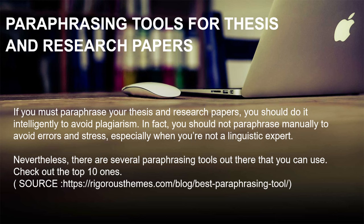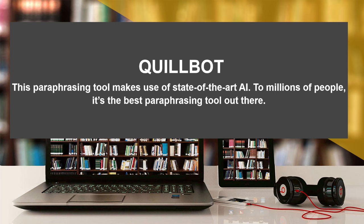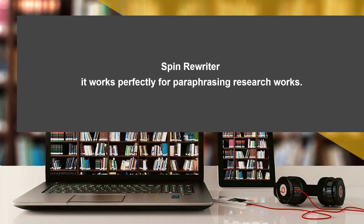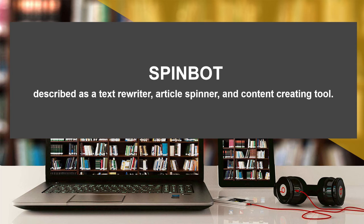Here are some examples according to rigorousthemes.com. First is QuillBot — this paraphrasing tool makes use of state-of-the-art AI, and to millions of people, it's the best paraphrasing tool out there. Next is SpinRewriter, which works perfectly for paraphrasing research works. Another paraphrasing tool is SpinBot. Before using these paraphrasing tools, be careful and responsible about the selection of these tools. You should be familiar with the pros and cons, or the advantages and disadvantages, of using technology before using these tools.